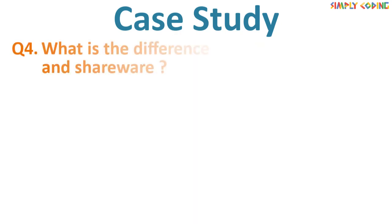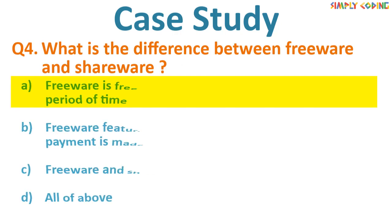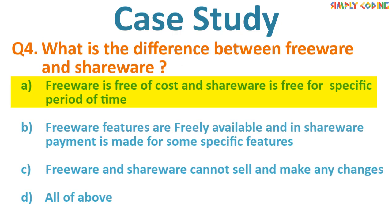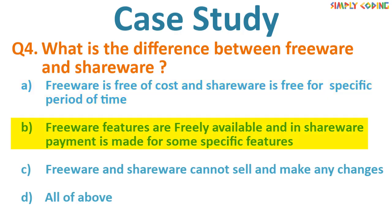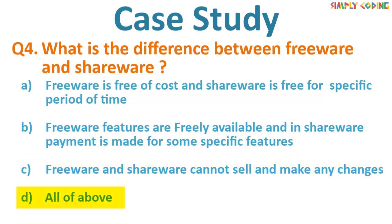What is the difference between freeware and shareware? Options: A) Freeware is free of cost and shareware is free for a specific period of time. B) Freeware features are freely available and in shareware payment is made for some specific features. C) Both freeware and shareware cannot be sold or changed. D) All of the above. The answer is D — all of the above points correctly give the difference between the two. You can use these points if a two-mark question is asked.